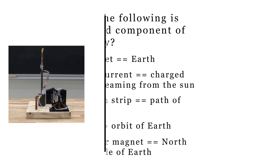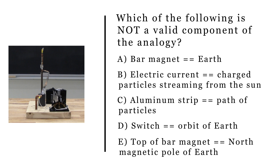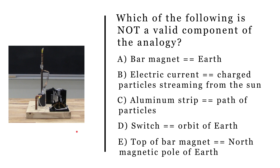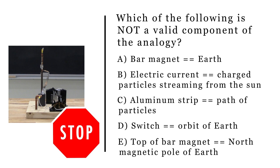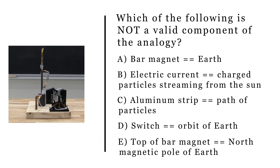Let's probe our understanding of this demonstration as an analogy for Earth's interaction with the solar wind. Which of the following is not a valid component of the analogy? Classroom students should follow normal procedures or instructor guidelines. Viewers not in a classroom should record your vote and explain your reasoning on a piece of paper. Please pause this video and answer the question. All of these except D are correct components of the demonstration being an analogy for charged particles streaming from the sun and interacting with Earth's magnetic field.